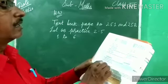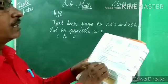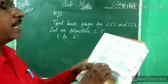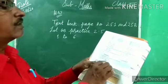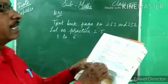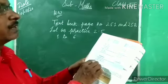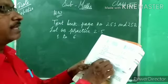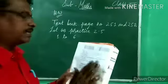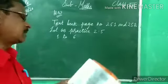Sixth: complete the following without actual subtraction. 1000 less than 30,745 — less ka matlab minus. 10,000 less than 1,07,290 — 1,07,290 mein se 10,000 minus karo, answer aa jaayega. So try to complete all examples.